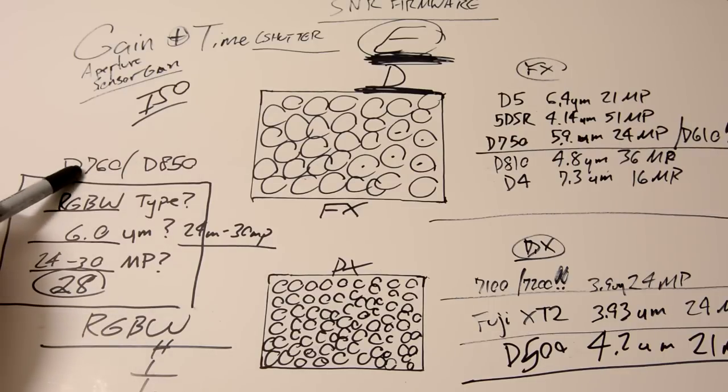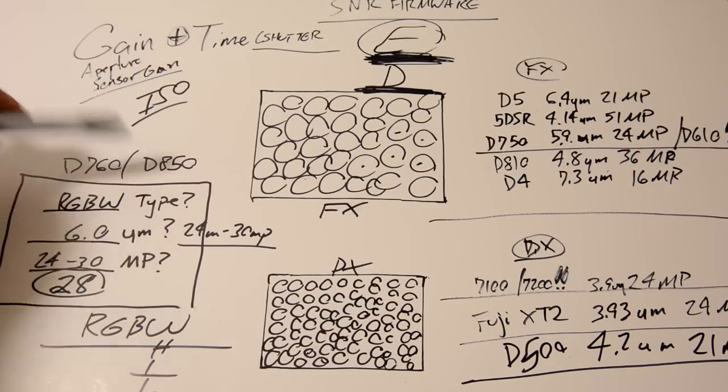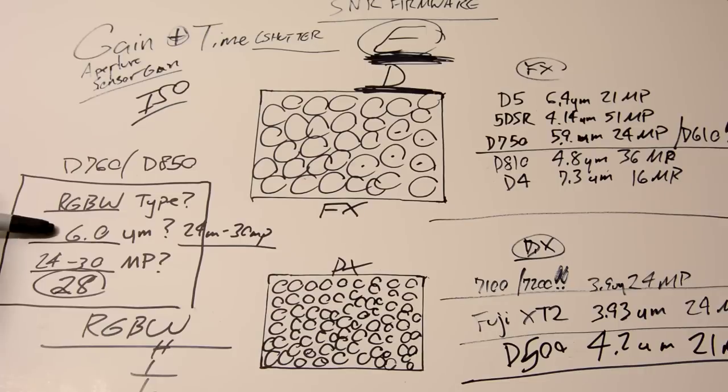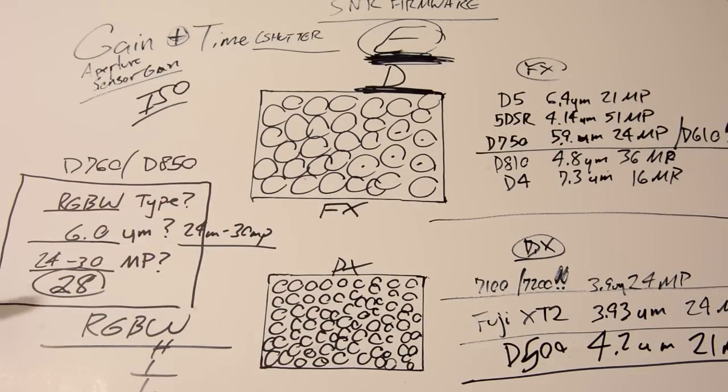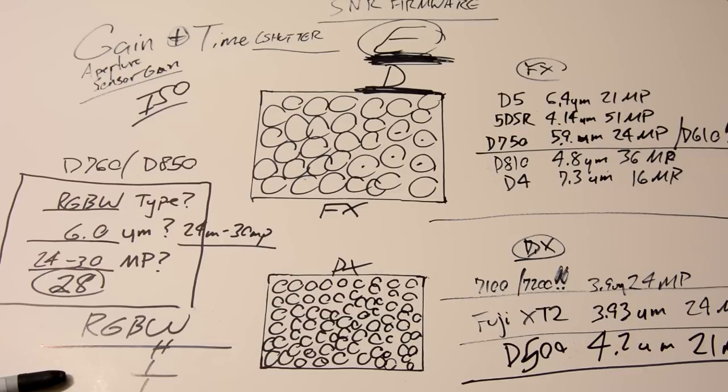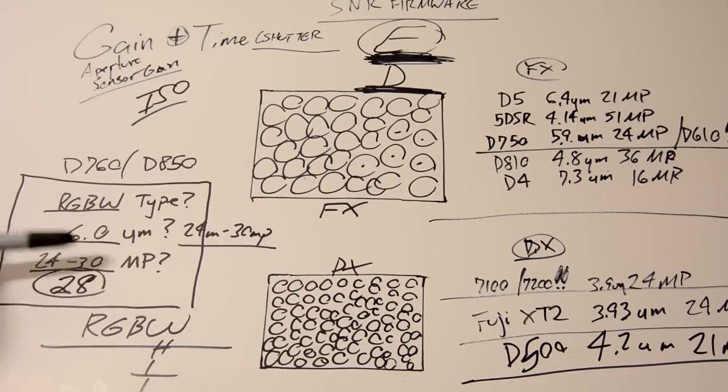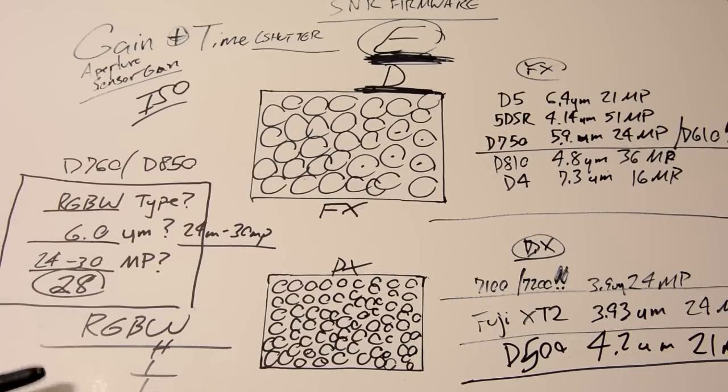So, the D760 slash D850 is going to be an RGBW sensor, with a huge honking enough micrometer pixel pitch, letting it be a 24 to 30, no more than 30. Definitely not more than that. Can't cut it. Micrometer pixel pitch, and it's going to be a 24 to 30. Basically, let's say the 28. It could be 24. It's probably going to be a 28. 30 max.